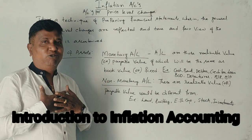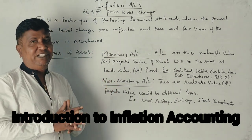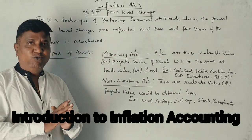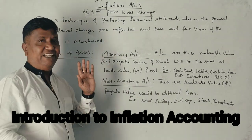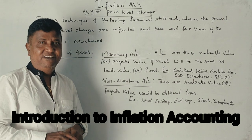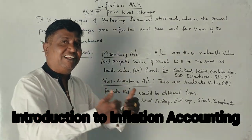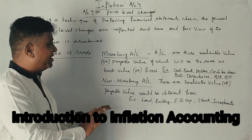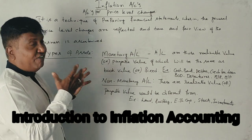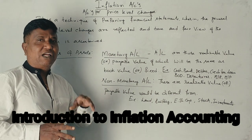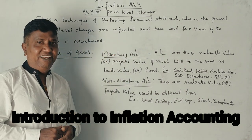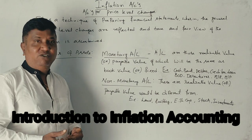So to summarize: monetary items are those assets and liabilities whose value does not change with price level changes, while non-monetary items are those whose value does change. This is the concept of inflation accounting — accounting for price level changes. We will try to solve some examination questions on this topic.